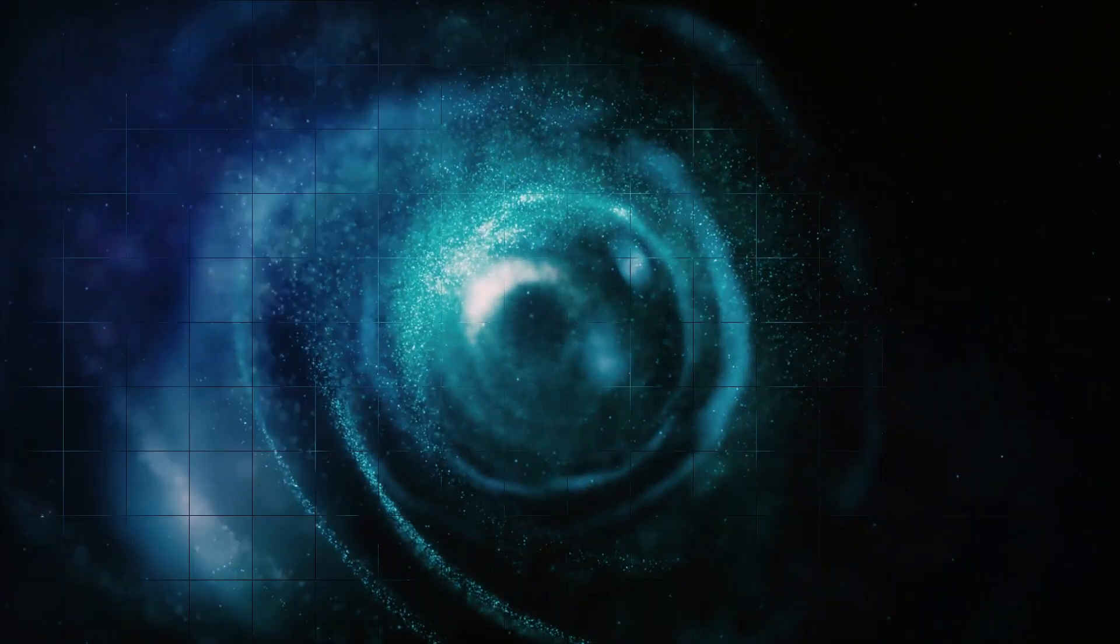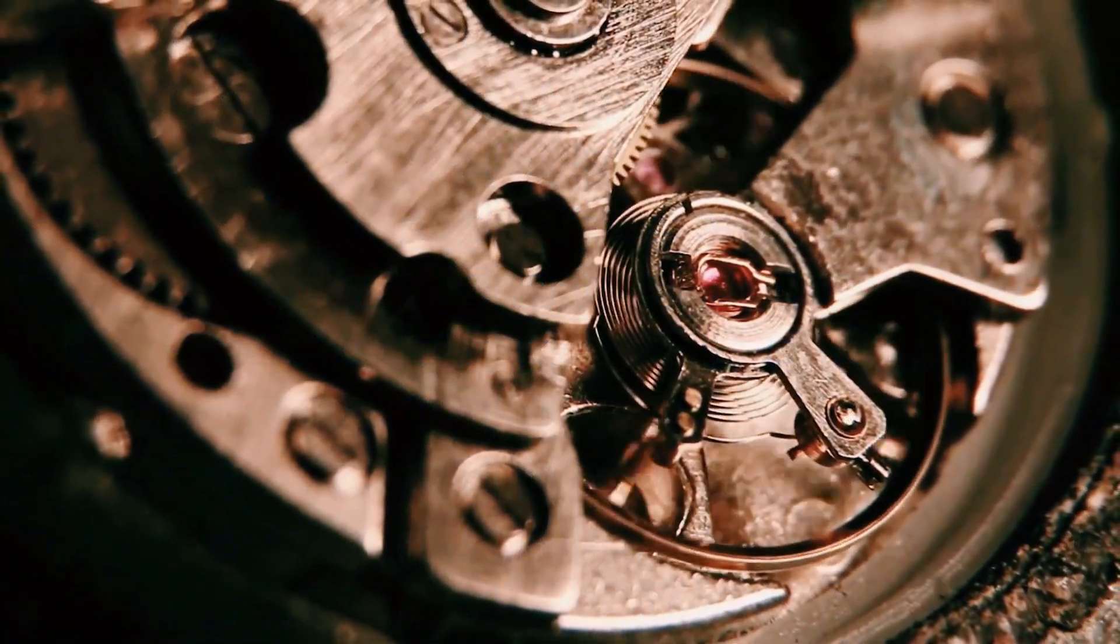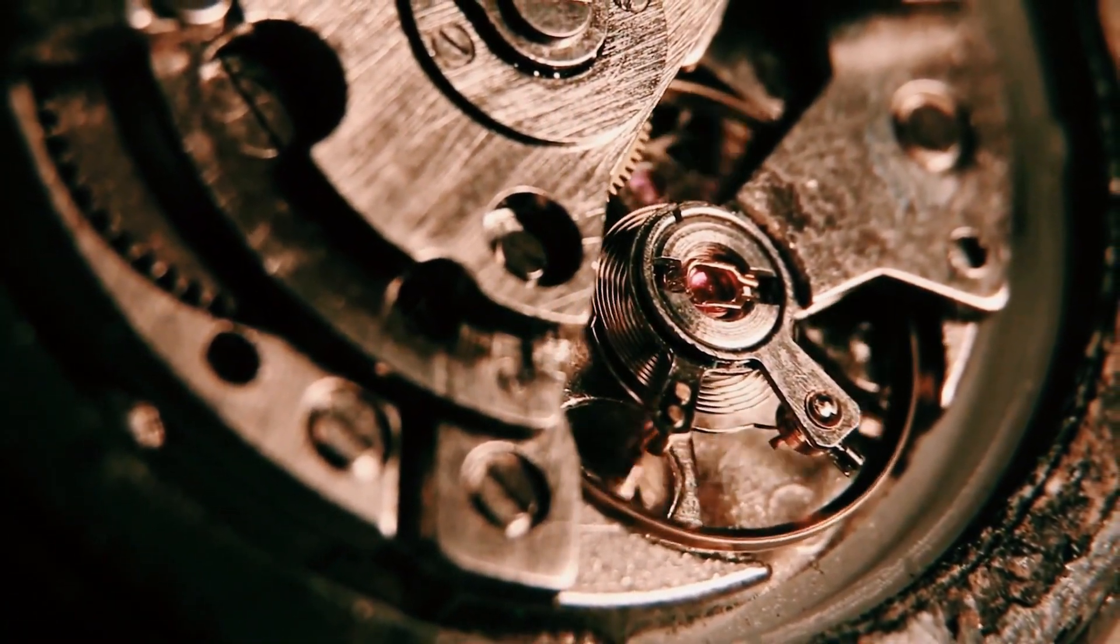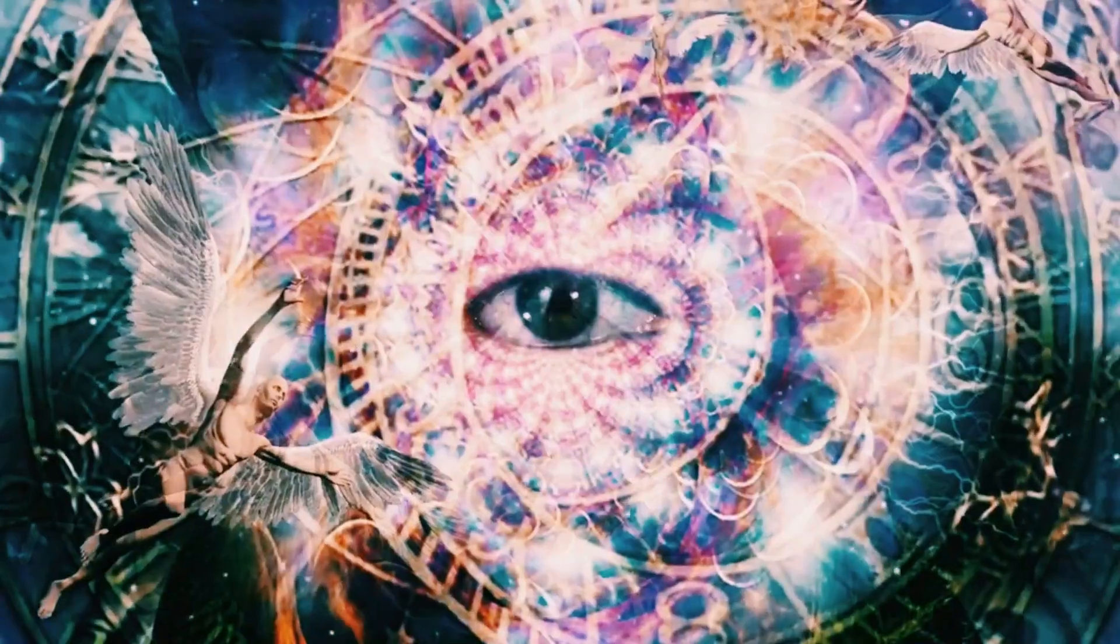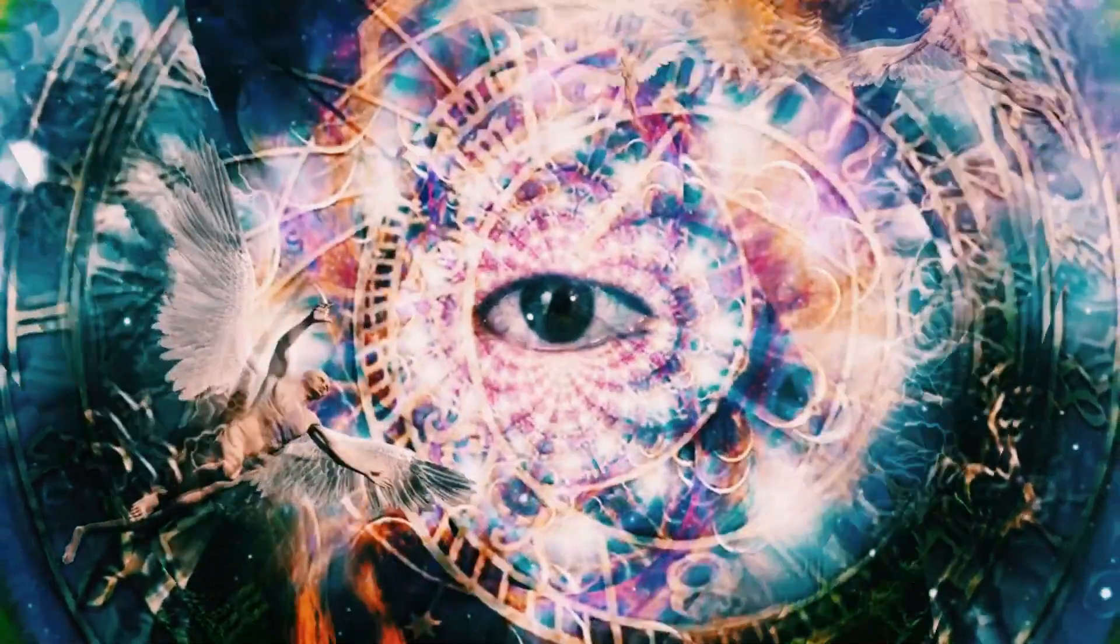The device is made up of dozens of intricate gears and dials, which work together to create a complex system that was capable of predicting astronomical phenomena such as lunar and solar eclipses.